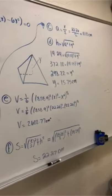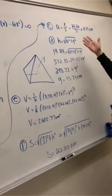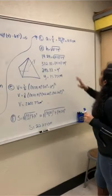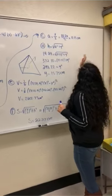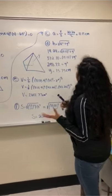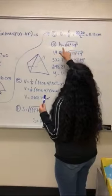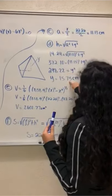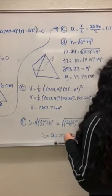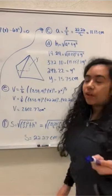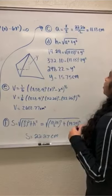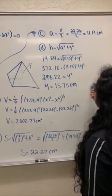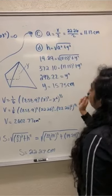Finally, we found the apothem, which is x over 2. Plugging in x = 22.26, the apothem = 22.26 over 2 = 11.13 centimeters. Then using h = the square root of the apothem squared plus y squared, we plugged in our known values and got 258.22 = y squared. Taking the square root gave y = 15.75 centimeters.